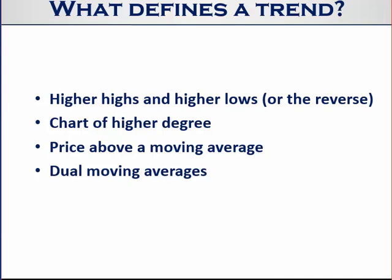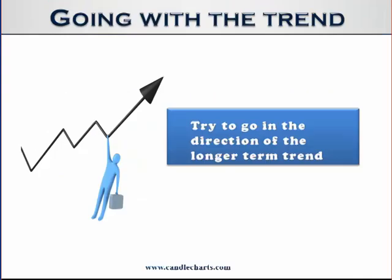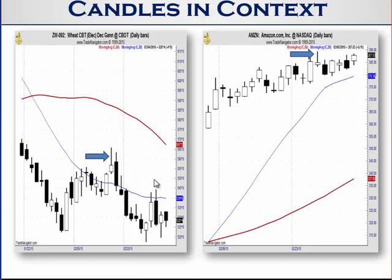One way to identify the longer-term trend is to look at a chart of a higher degree — for example, if you're on a daily chart, look at a weekly chart. Another approach is whether price is above or below a moving average. When financial networks say a stock is above its 200-day moving average, they're saying the trend is up. I personally use a 20 and 50-day simple moving average: if the 20 is above the 50 and both are sloping up, the intermediate or longer-term trend is up. If the 20 is under the 50 and both are sloping down, the longer-term trend is down.